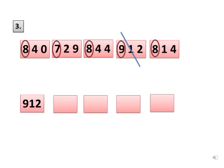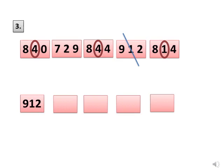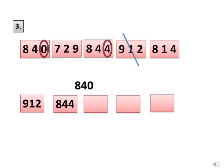After 9, 8 is the greater digit. But there are 3 numbers with digit 8 at hundreds place. So we will compare the tens place of the numbers starting with 8. In 840 it is 4, in 844 it is 4, and in 814 it is 1. 4 is greater. But there are 2 numbers with digit 4 at tens place, so we will compare the ones place digit of these 2 numbers. In 840 it is 0 and in 844 it is 4. 4 is greater than 0, so the number 844 is greater and we will write it in the second box, and 840 in the third box. Now cross both the numbers.